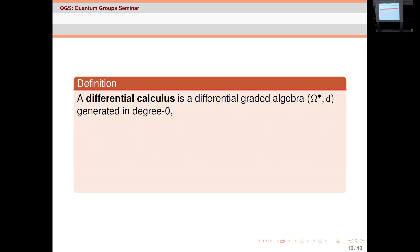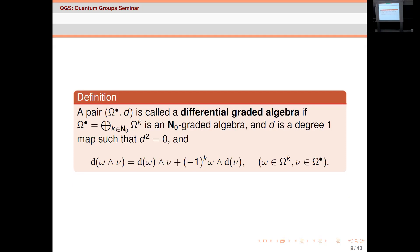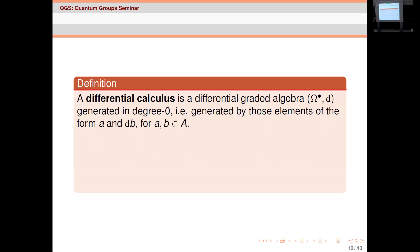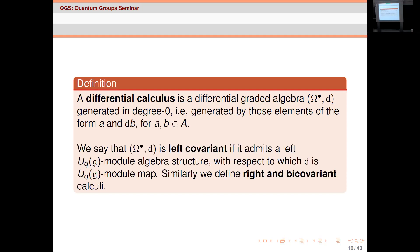Woronowicz's idea was to look for these DGAs over the polynomial algebra O_q(G) of the quantum groups, and by introducing some symmetry it should hopefully just pop out that there's a naturally unique one, as in the classical case. We want to put a small extra constraint: these things should be generated in degree zero, which means the DGA is generated by elements of the form a·db — this is what actually happens on the classical manifold. You can prove this using a partition-of-unity argument on a manifold.